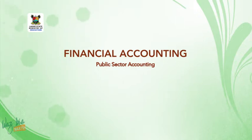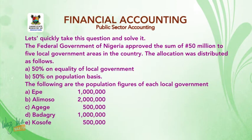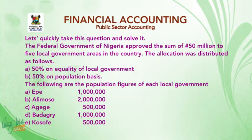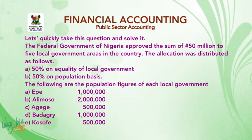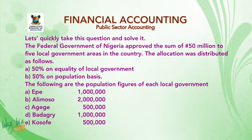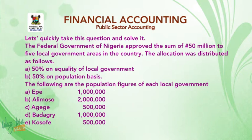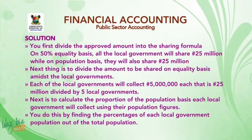Welcome back. The federal government of Nigeria approved the sum of 50 million Naira to five local government areas. The allocation was distributed as follows: A) 50% on the equality of local government basis, B) 50% on population basis. The population figures are: Ekwe — 1 million; Alimusha — 2 million; Agenge — 500,000; Badagri — 1 million; Kochafe — 500,000. Solution: first, divide the approved amount by the sharing formula. On 50% equality basis, all local governments share 25 million Naira; on population basis, they also share 25 million Naira.